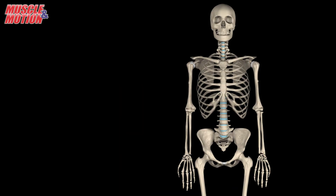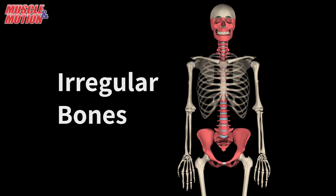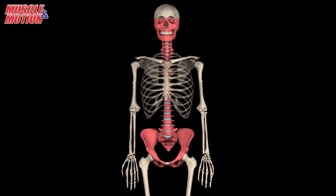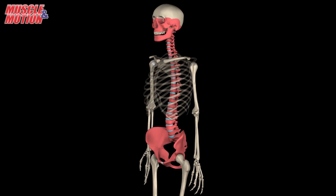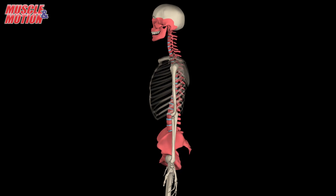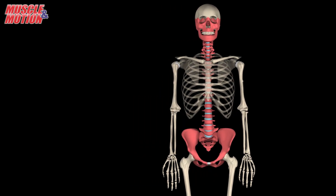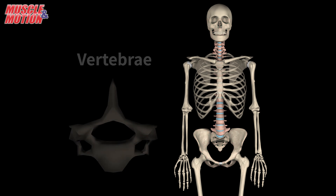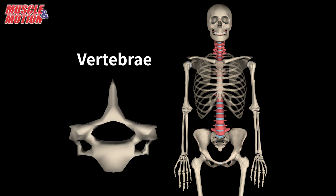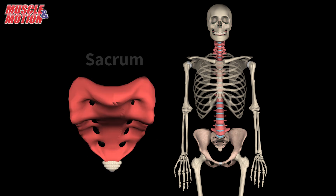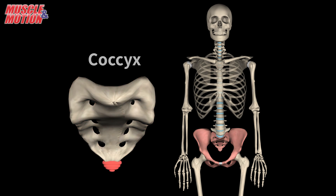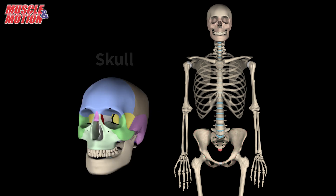Now let's look at the irregular bones. As their name implies, these bones have irregular shapes and structures, and cannot be defined by any specific character. Examples of irregular bones include the vertebrae, sacrum, coccyx, and some of the skull bones.